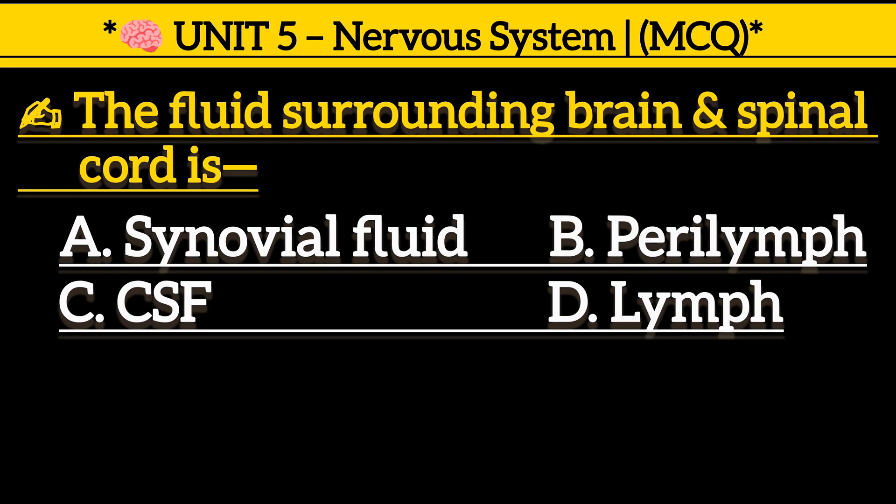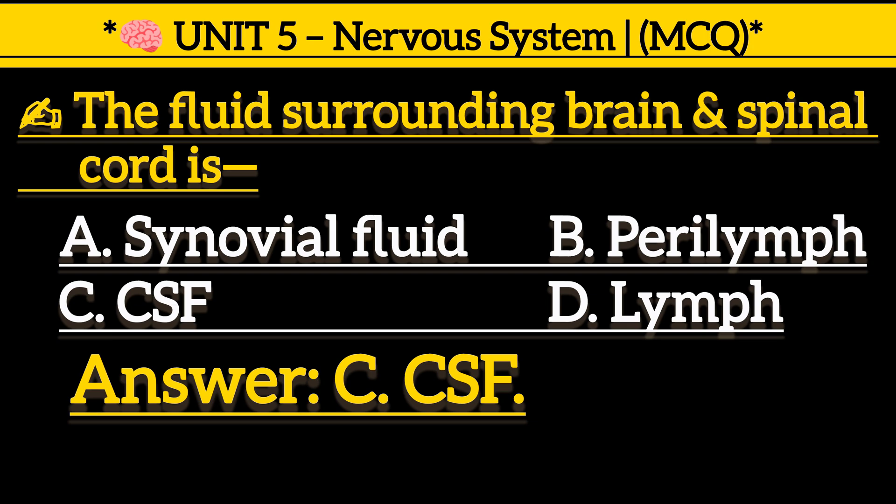The fluid surrounding the brain and spinal cord is: Option A, synovial fluid. Option B, perilymph. Option C, CSF. Option D, lymph. Correct answer is Option C, CSF.